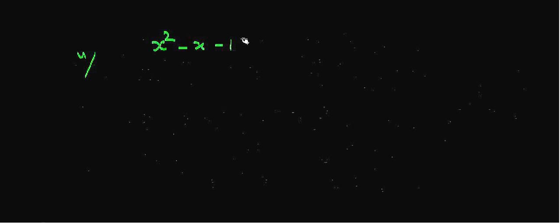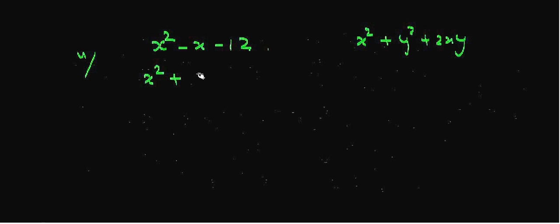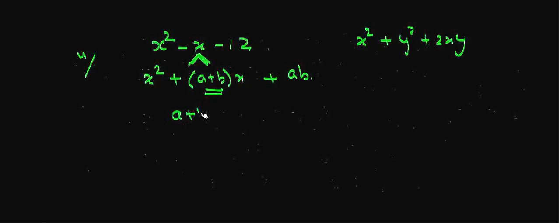Now consider the quadratic expression x² - x - 12. This expression is not of the form x² + y² + 2xy. So in this type of trinomial, we try to write the expression in the form x² + (a + b)x + a·b — that is, we split the middle term. We want two numbers such that their sum is the coefficient of x, which is -1, and their product is -12.